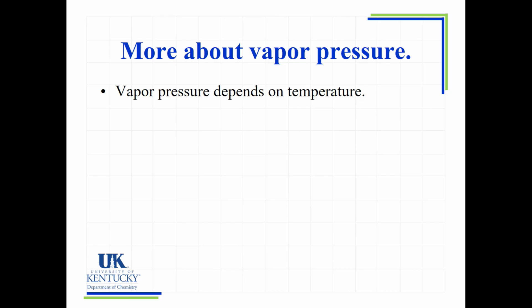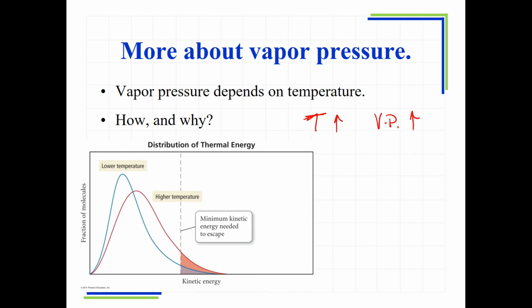Vapor pressure depends upon temperature because the rate of evaporation depends upon temperature. As temperature increases, the vapor pressure will increase. At the molecular level, increasing temperature increases the average kinetic energy of molecules, which increases the rate of vaporization.